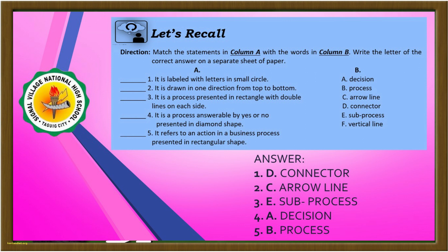Number 3: It is a process presented in a rectangle with double lines on each side. Yes, the correct answer is E — sub-process. Number 4: It is a process answerable by yes or no, presented in a diamond shape. Yes, that is A — decision. Number 5: It refers to an action in a business process presented in a rectangular shape. Yes, that is letter B — process.